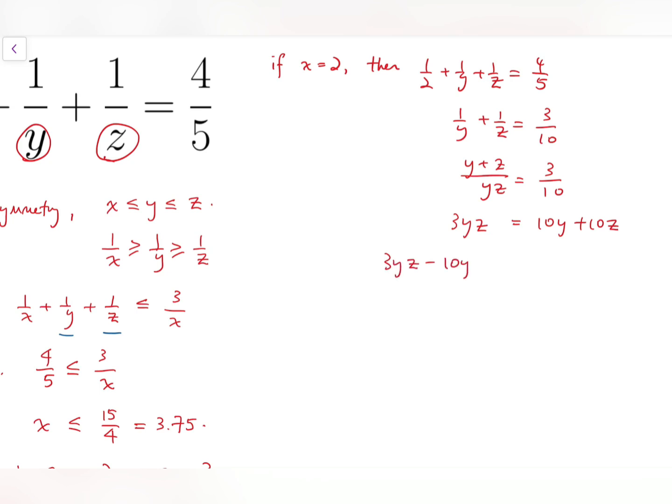So we have 3yz equals 10y plus 10z. And I'm going to move to the other side and I'm going to factorize it. To make it factorizable, and the coefficients of y and z are equal, so to follow the symmetry, I'm going to multiply both equations by 3.